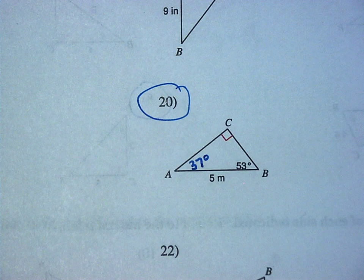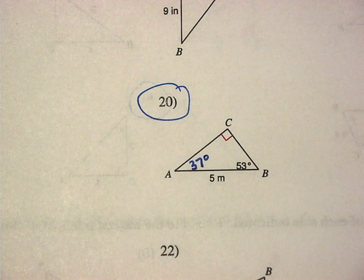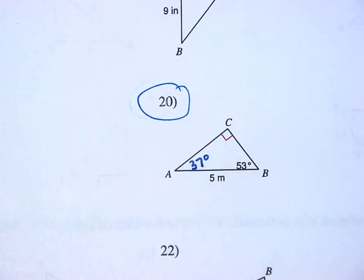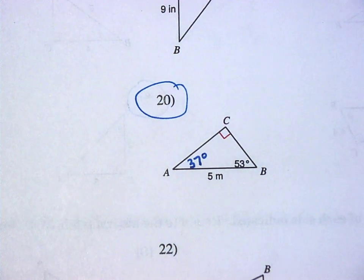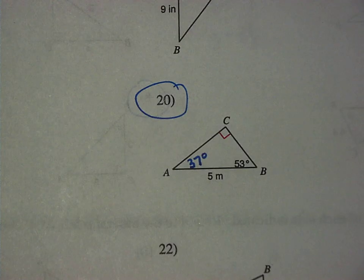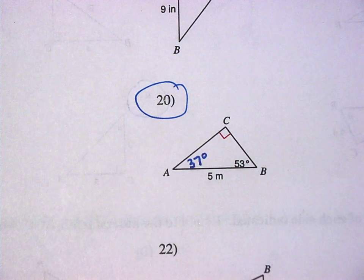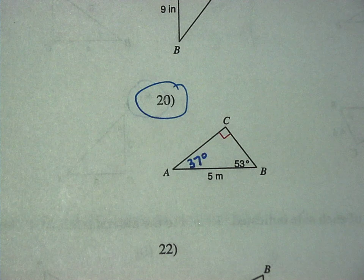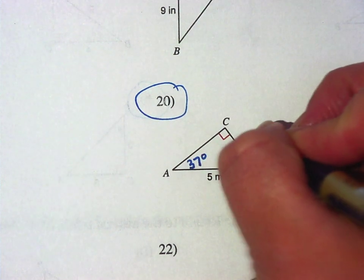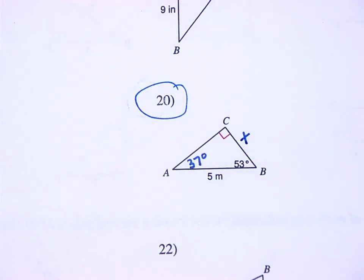Now we've got to find the other two sides. We're going to have to find one of them using SOHCAHTOA. You could find both of them using SOHCAHTOA if you want. Or you can find one of them using SOHCAHTOA and one of them using the Pythagorean theorem. Because you'll have two sides of a right triangle, right? So it's up to you. So somebody tell me what we're doing first. Somebody pick a side.